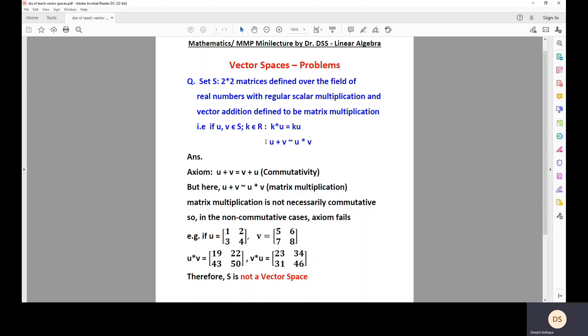Now, in the first situation, U plus V, it will be defined as matrix multiplication U into V. So let us find out the product. You can try to find it out on your own. You will realize that the product comes out to be this matrix 19, 22, 43, 50.